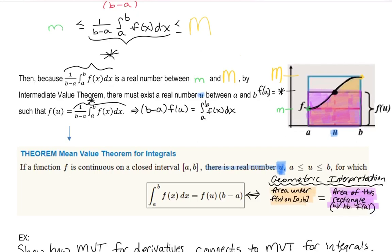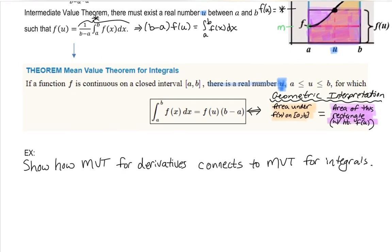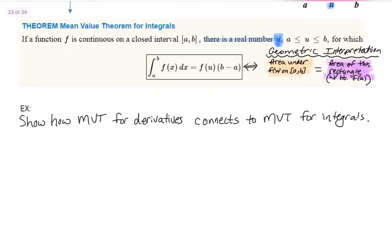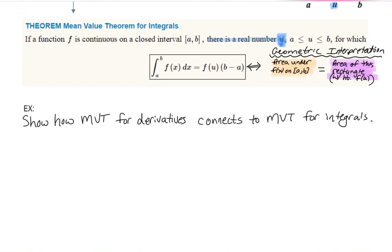You may have been thinking we already had a mean value theorem — and we did, for derivatives. So I want you to recall the mean value theorem for derivatives and connect it to the mean value theorem for integrals. The mean value theorem for derivatives said: if f was continuous on the closed interval from a to b and differentiable on the open interval from a to b...